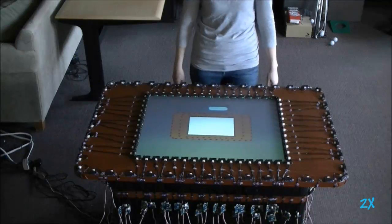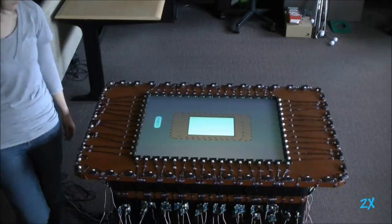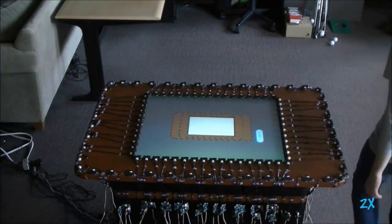As a user approaches the display, their body is detected and its approximate location is determined by the outward-facing sensors. The user's location and distance from the tabletop is continually monitored as the user walks around the surface.